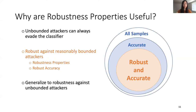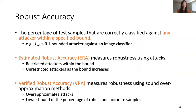We define robust accuracy as follows. Given the space of all samples we want to predict, the classifier is accurate on some of them. Within those accurate samples, we evaluate how robust the classifier is — whether it predicts them in the same way within some restrictive threat model. Robust accuracy is the percentage of samples that are correctly classified against any attacker within a specified bound.